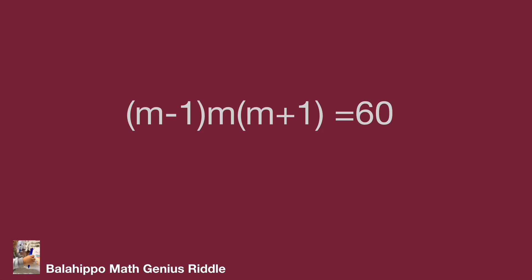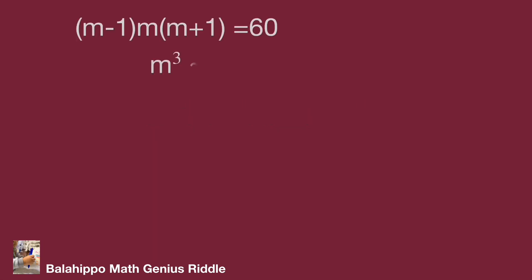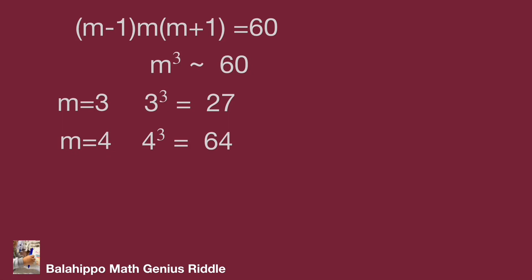Well, to get the value easily, we can set m times m times m equal to m cubed, close to 60. Let's find the m value. When m equals 3, 3 cubed equals 27. When m equals 4, 4 cubed equals 64. When m equals 5, 5 cubed equals 125. Since 125 is far away from 60, we ignore m equals 5.